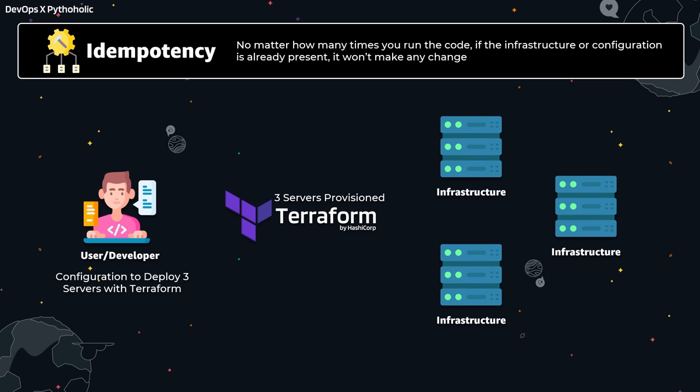The result might change due to an external factor like a POST operation on that particular data, but the GET operation itself doesn't change the end result. No matter how many times you run the code, if the infrastructure or configuration is already present, it won't make any change. We have a user deploying three servers with Terraform. If we remove one of them and rerun the same Terraform code, it will create the one that was missing and won't recreate the already existing ones — thus maintaining the state.